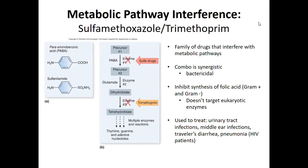Sulfamethoxazole and trimethoprim are given in combination. There are two points where they interfere in the pathway. It's nice to give both of them because it helps prevent resistance. Basically they interfere with folic acid synthesis, and when you interfere with these pathways, you interfere with the ability to make nucleotides. If you interfere with their ability to make nucleotides, you interfere with their ability to replicate — no nucleotides, no replication.